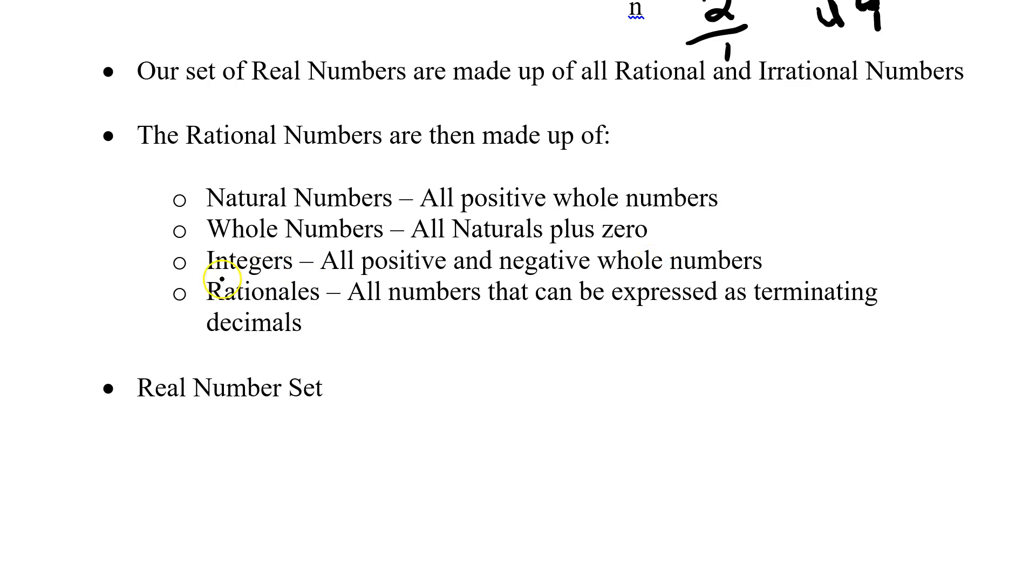And then finally, rationals. Rationals, again, we've seen, are all numbers that can be expressed as a fraction. So this is our smallest set because it's all the positives. Next smallest set, we just add one to it. We add the zero to it. Integers. And then our largest group is the rationals.